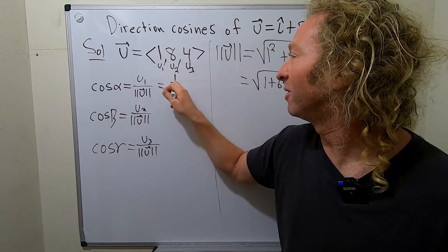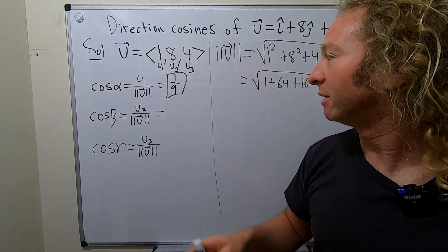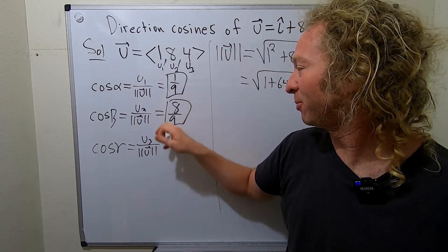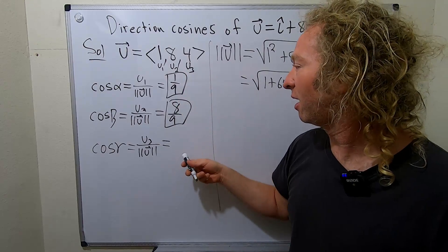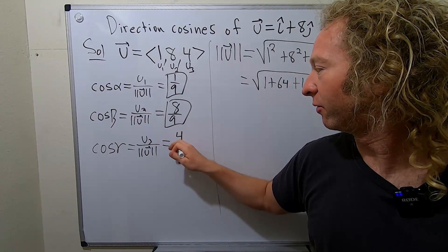So, this will be 1/9. Oh, that's beautiful. And this will be, let's see, 8/9, sidetracked. And then this will be, cosine gamma would be, I guess that would be 4/9, so 4/9.